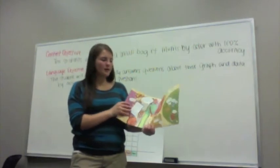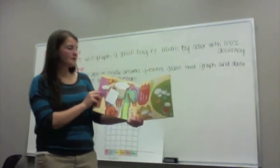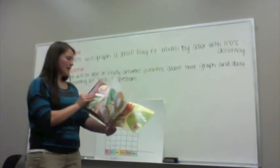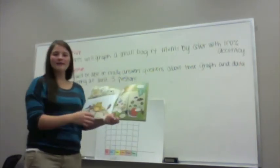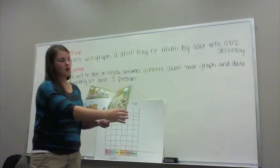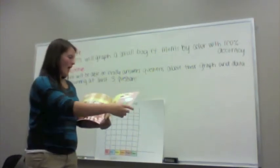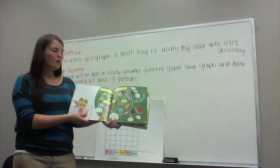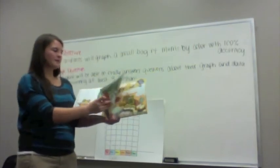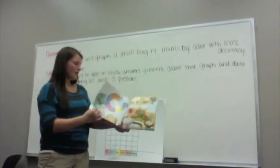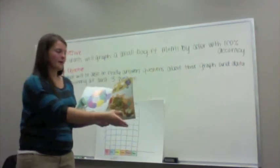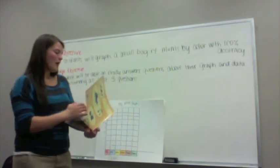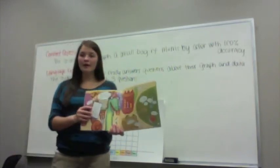So in this book we had a bunch of different types of graphs. This graph right here was called a quantitative graph — we'll cover that tomorrow. This graph is called a Venn diagram — we'll cover that later; it compares and contrasts two groups. This was called a circle graph, and we'll also cover that later. This graph is called a bar graph, which is what we're going to cover today.